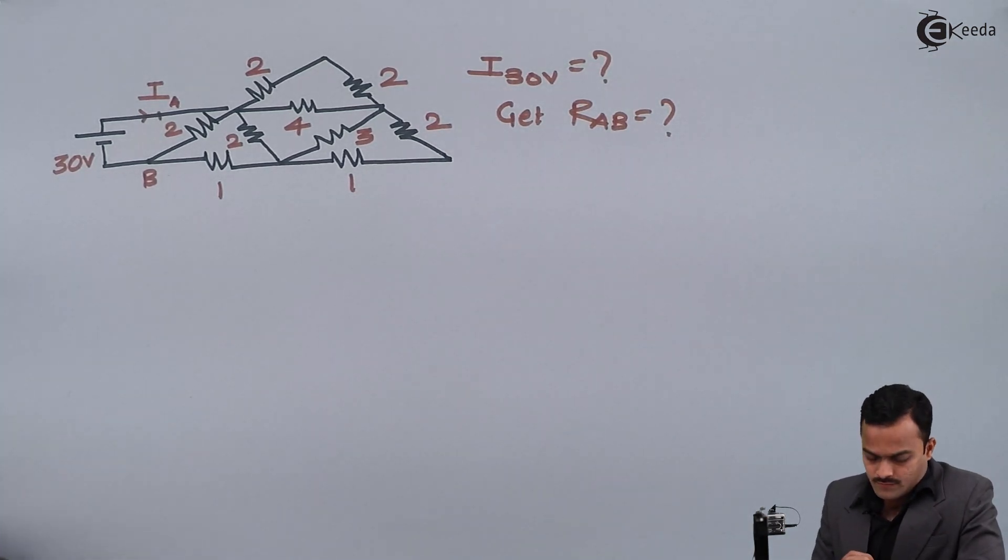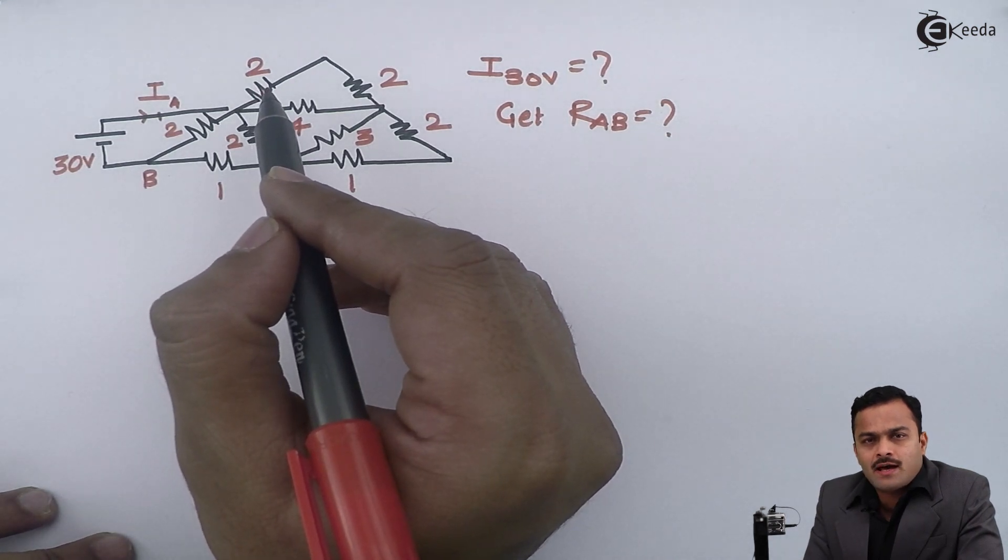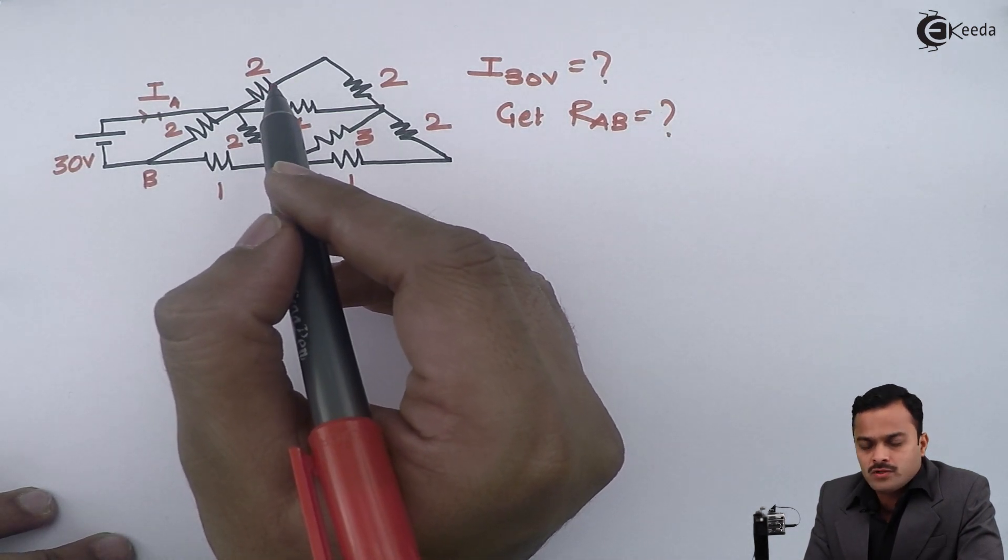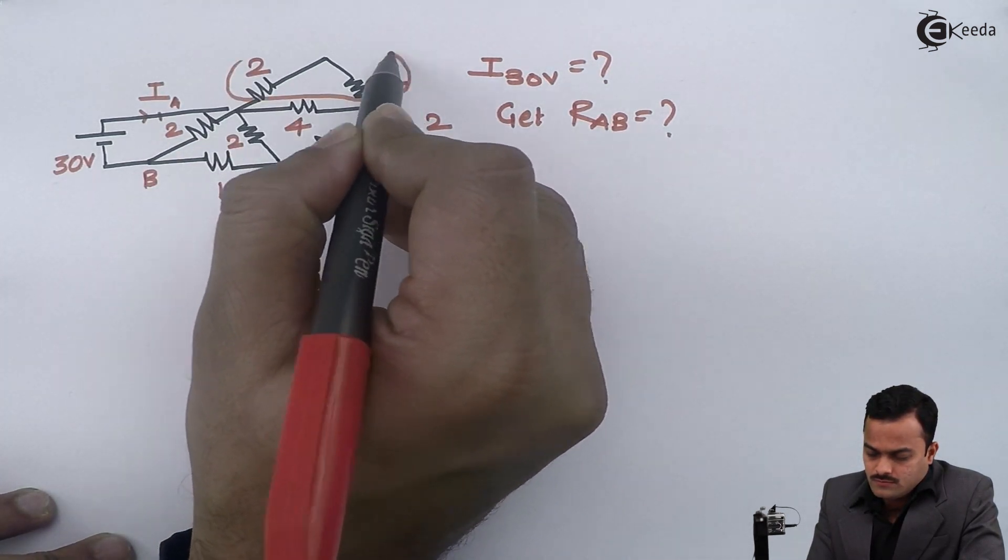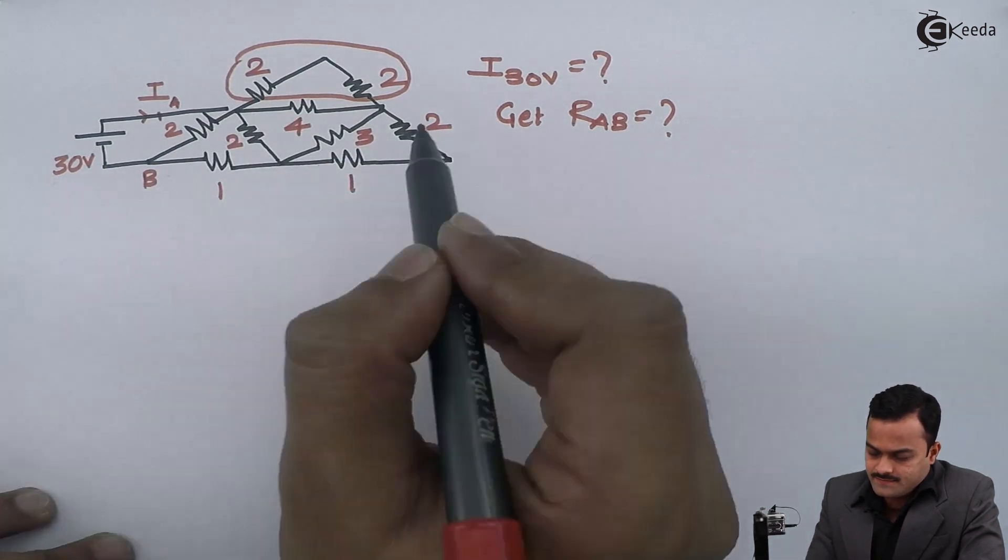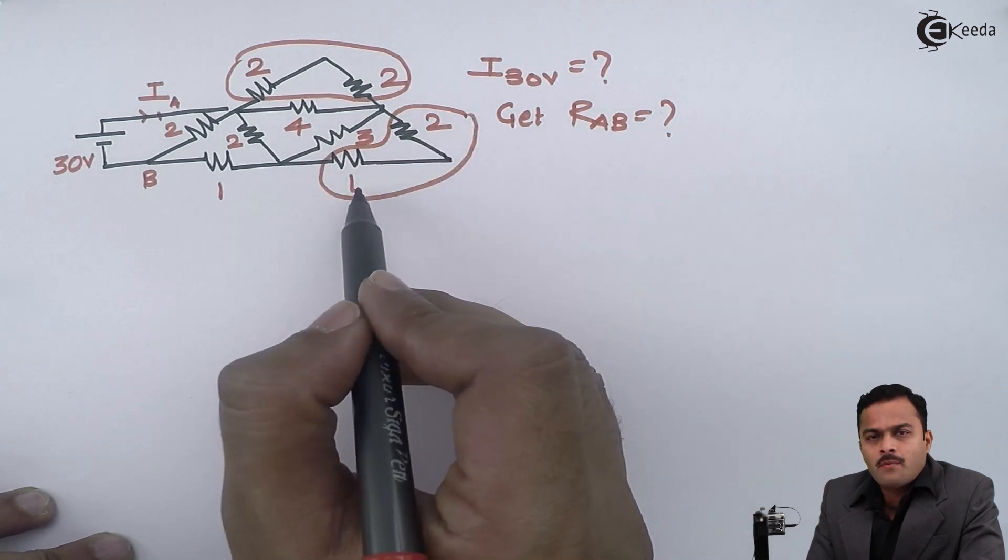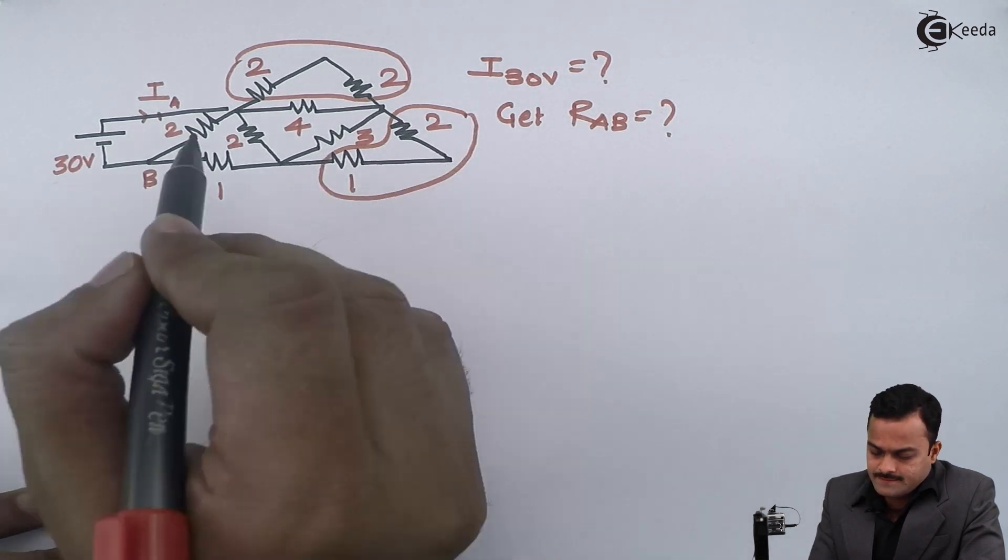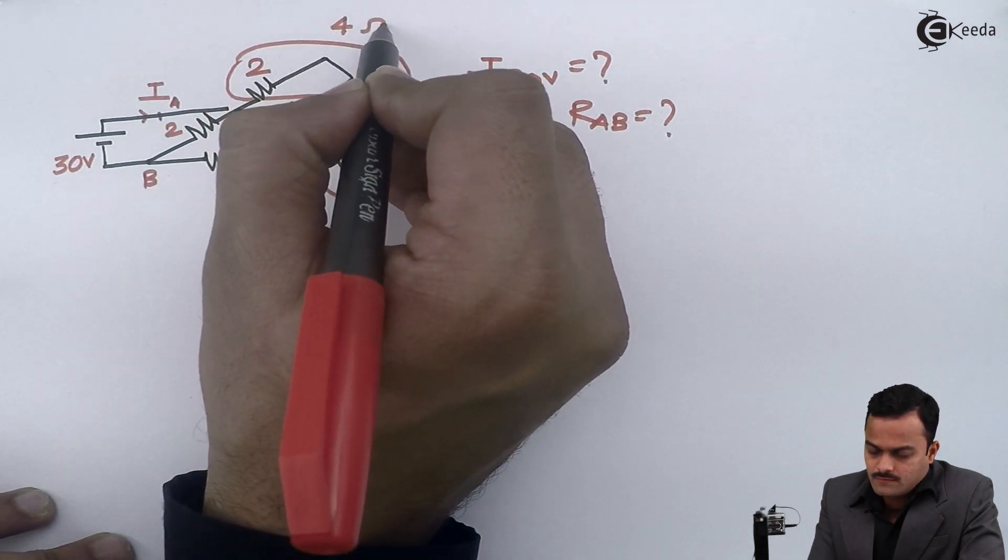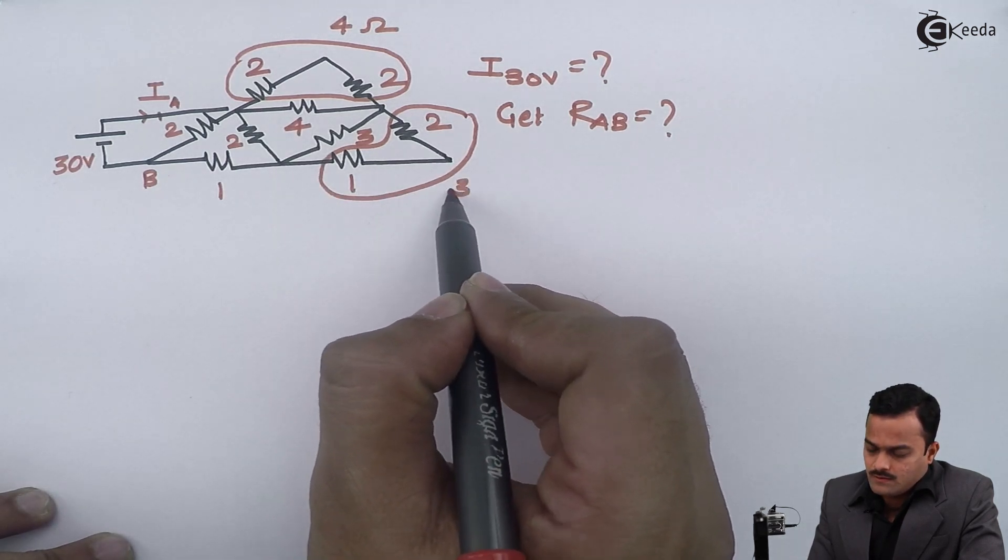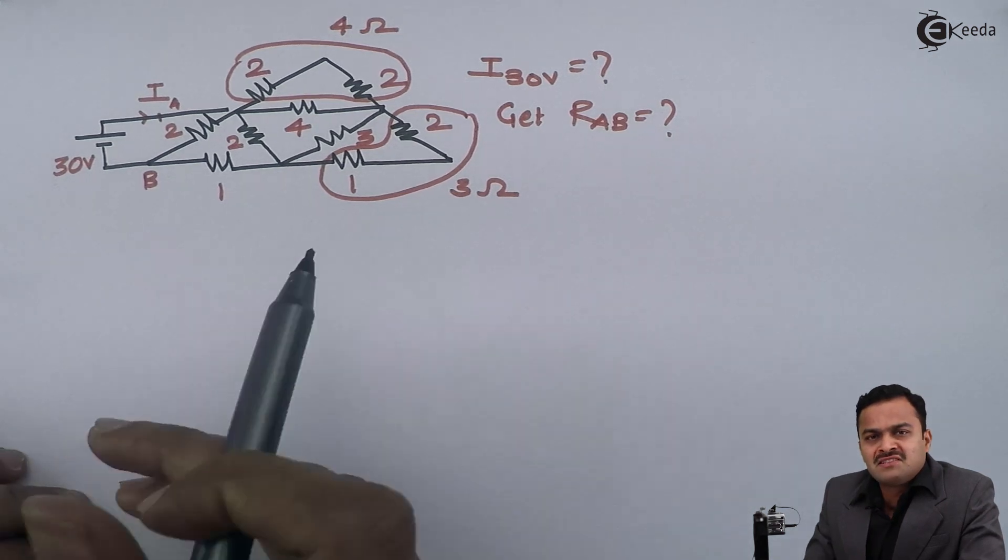So let's start. You have to check whether there is any series or parallel connection directly available. If I see properly, I will notice these two resistors are in series, and 2 ohm and 1 ohm are also in series. So if I reduce these, I will get 4 ohm and 3 ohm. Let's draw the circuit with this arrangement.